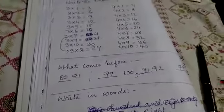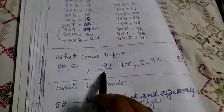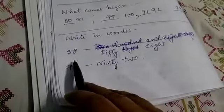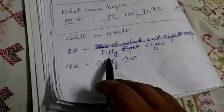Okay, now what comes before 81? 80. What comes before 100? 99. 92? 91. 80? 79. Write in words: 58.